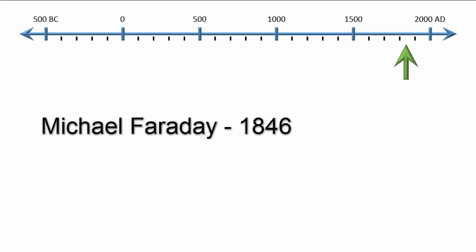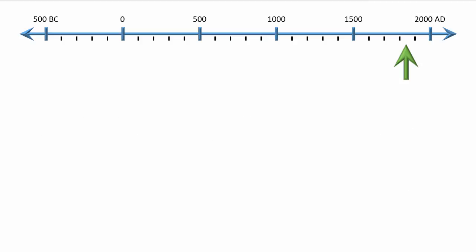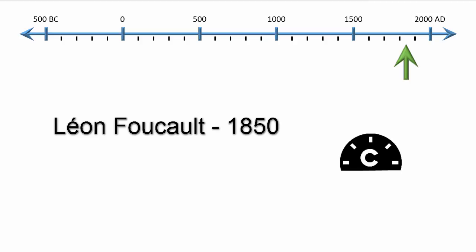In 1846, Michael Faraday is best known for showing that there is a direct relationship between electricity and magnetism. Four years later, in 1850, Léon Foucault accurately calculated the speed of light through air and water.